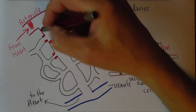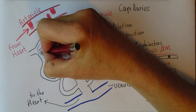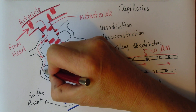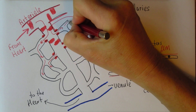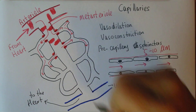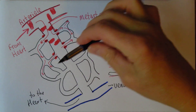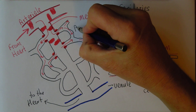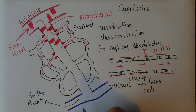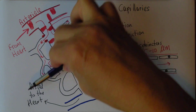Blood is going to be coming from the arteriole and flowing through these capillary networks, round about the loops. We notice that the blood is going into the capillaries from the metarteriole. This part is the proximal part of the system; the bit lower down here is the distal part. Proximal is closer, distal is more distant.